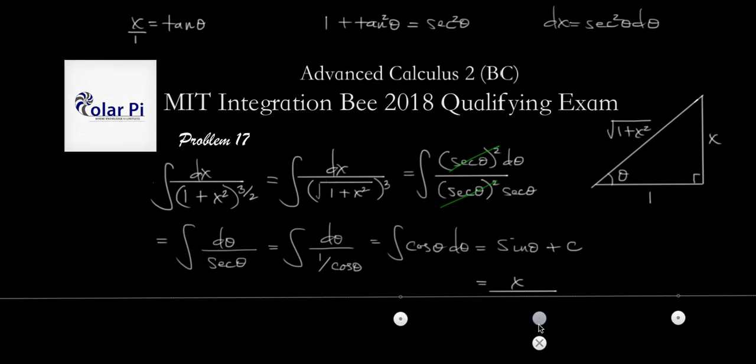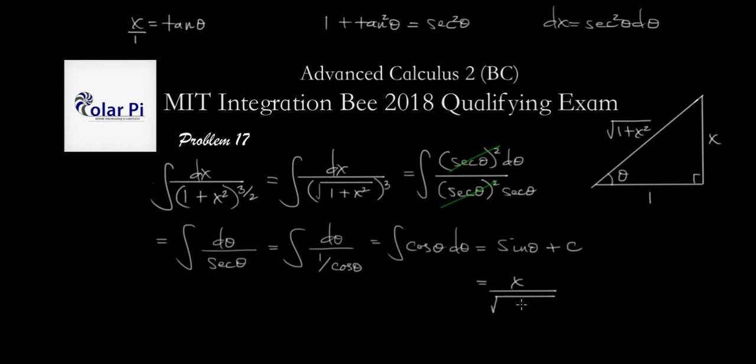So this, and then it's square root of 1 plus x squared, right? Opposite over hypotenuse, plus c, and we're done. Keep watching.